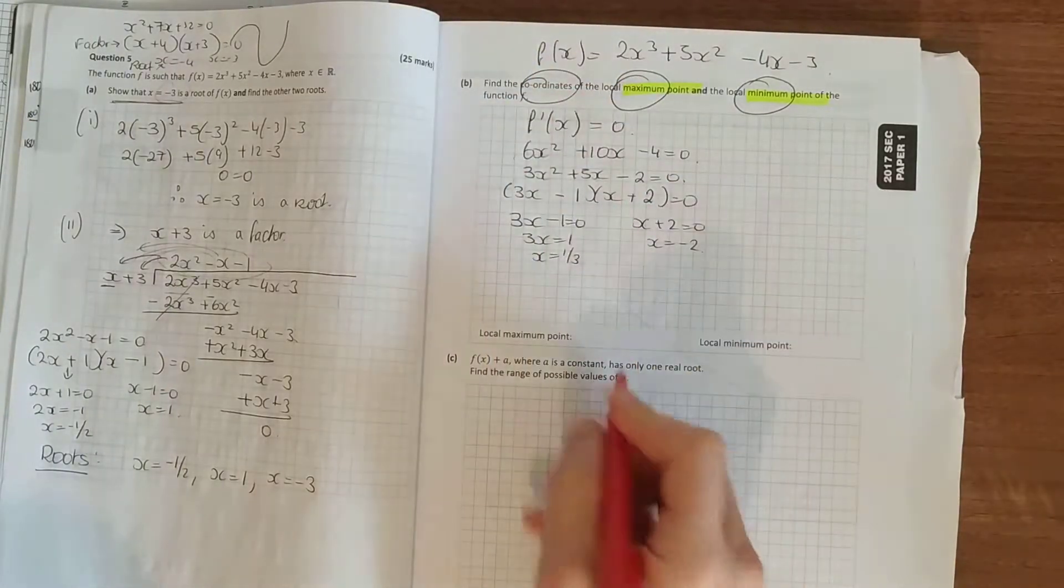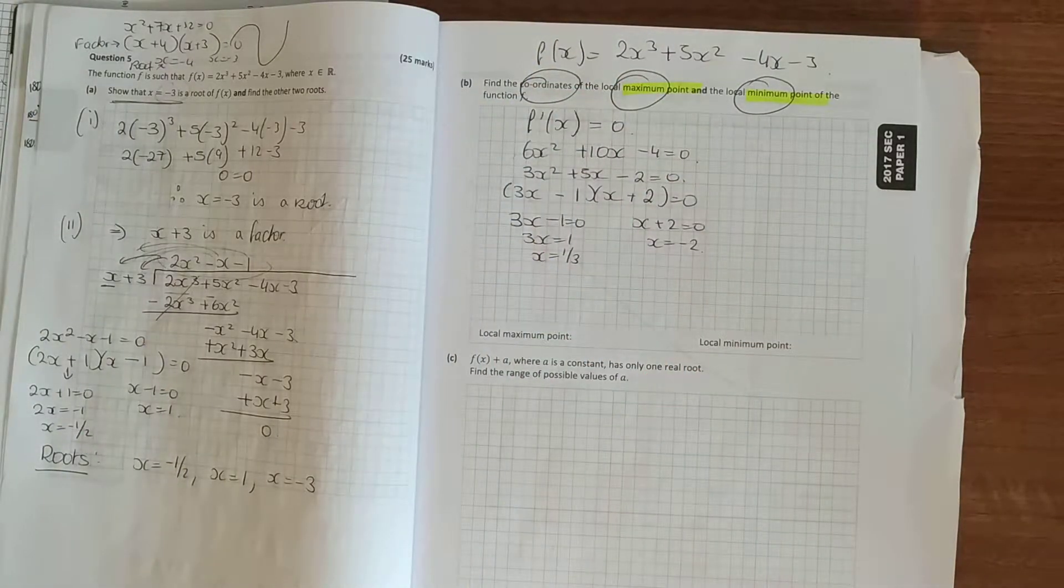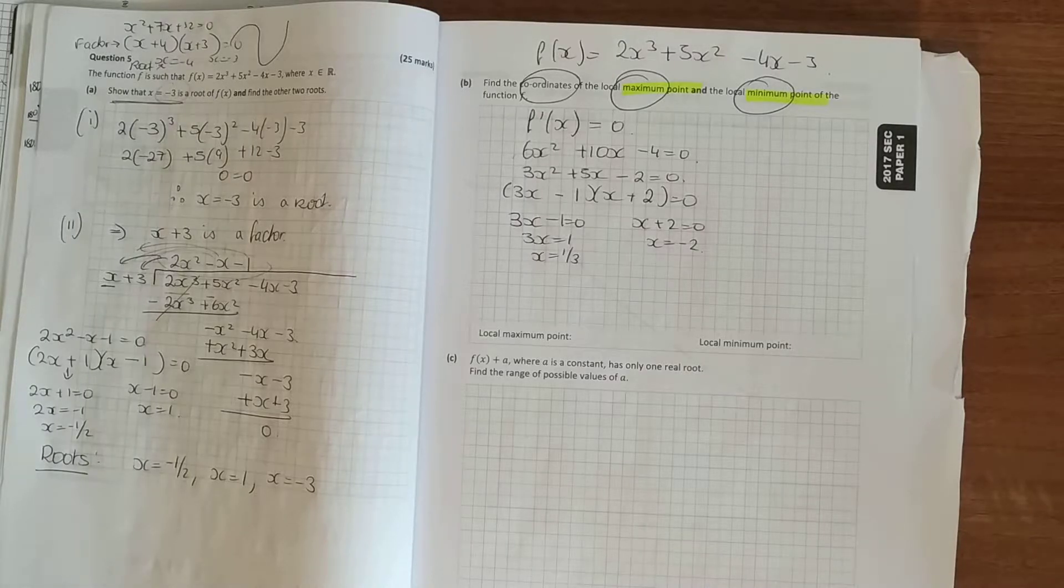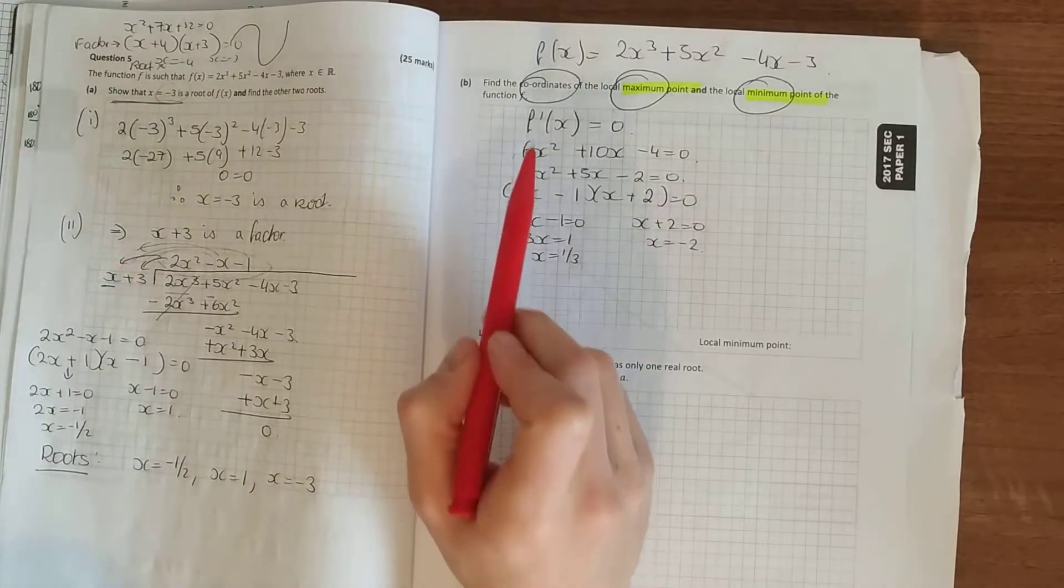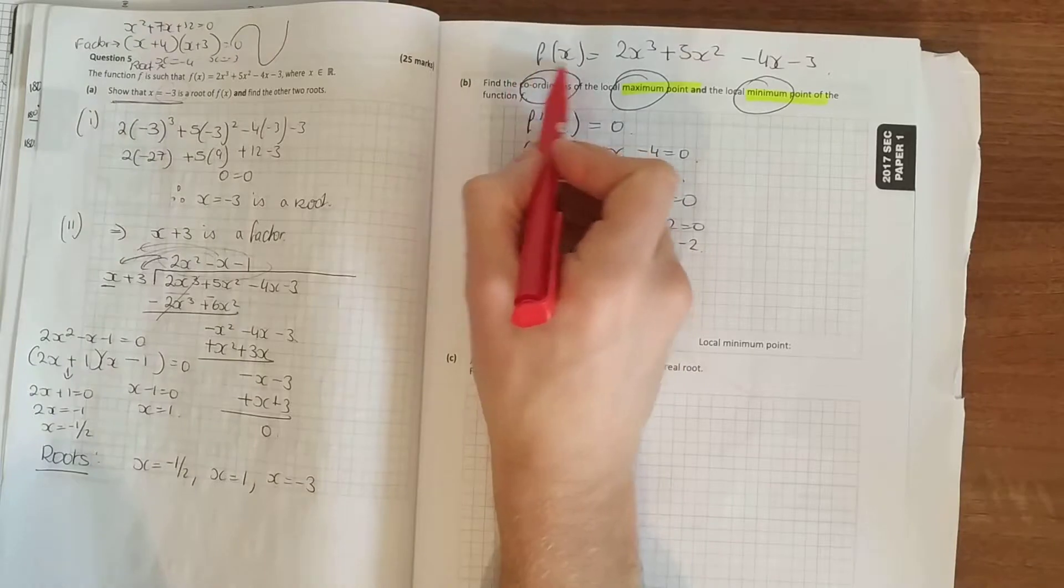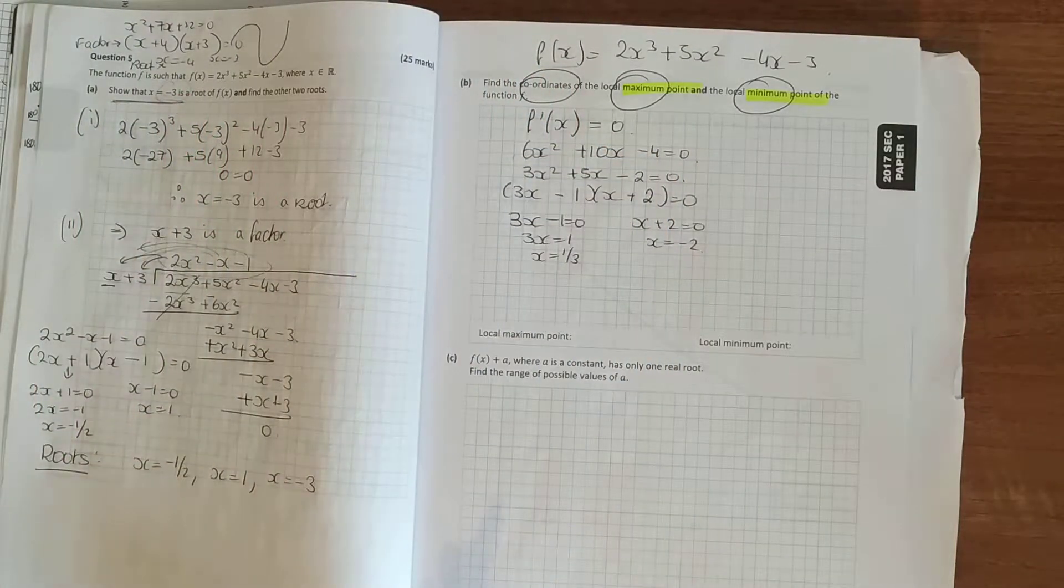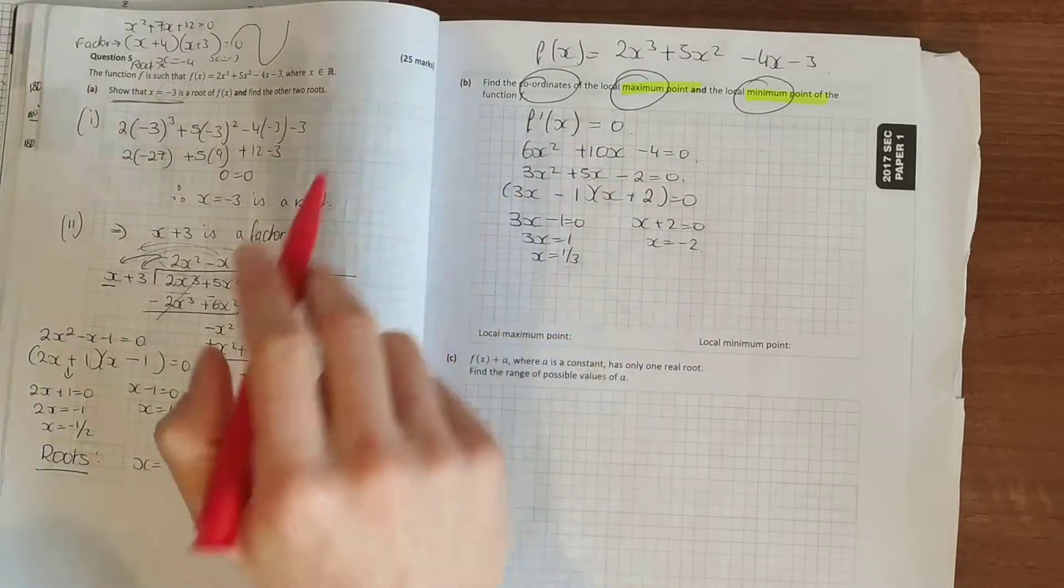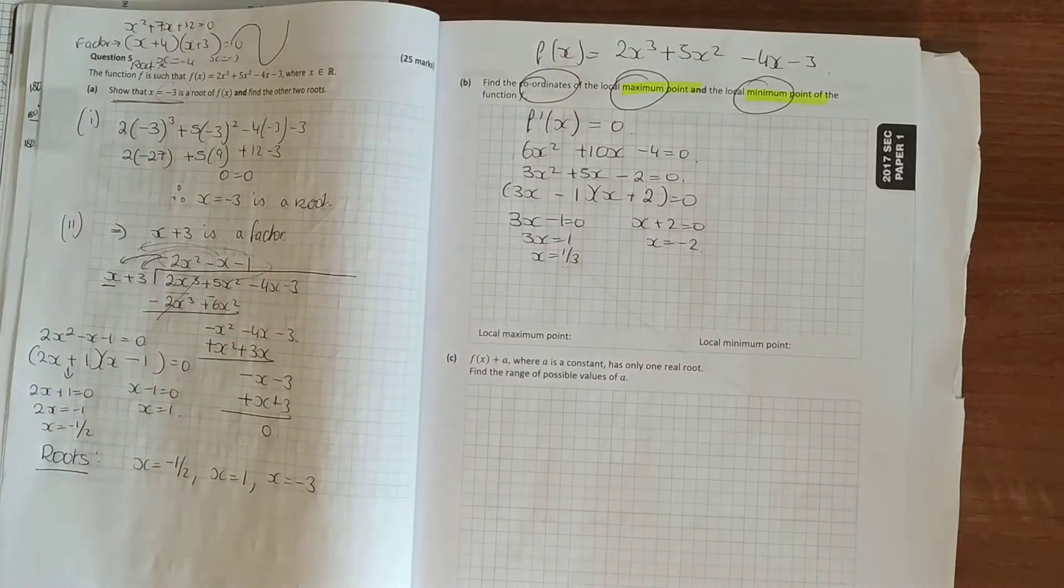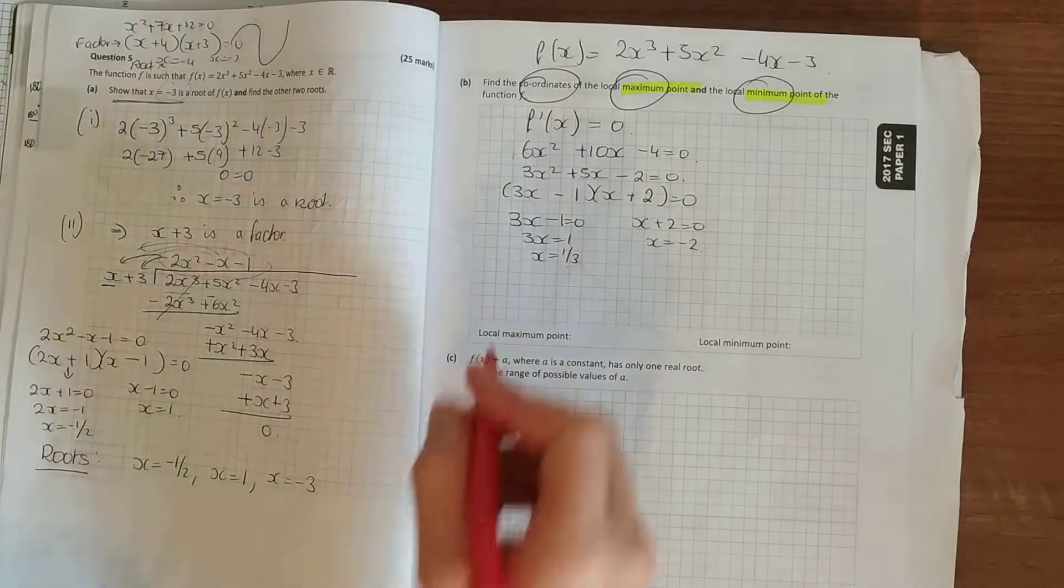Now technically it says find the coordinates. So we have 2 coordinates here for your maximum and your minimum point. For a coordinate you need an x and a y. Now where else do you see your y? Is this y? No. That's your derivative or slope. Your y is up here, the original function given on the previous page. So what you've got to do is sub in each of these terms individually into your f(x) and find your y coordinate from that.